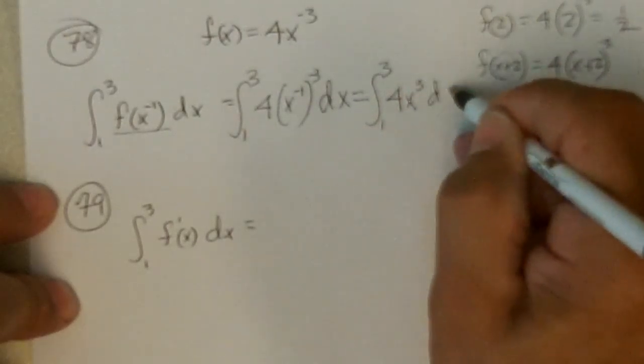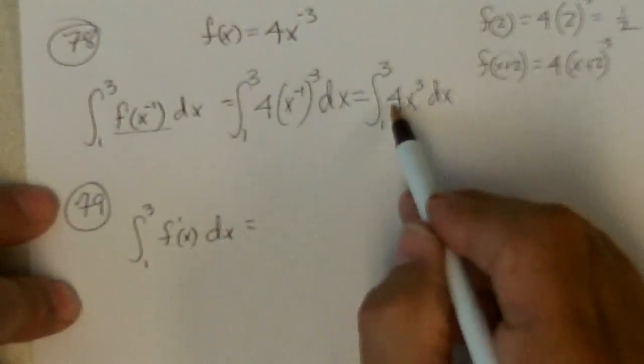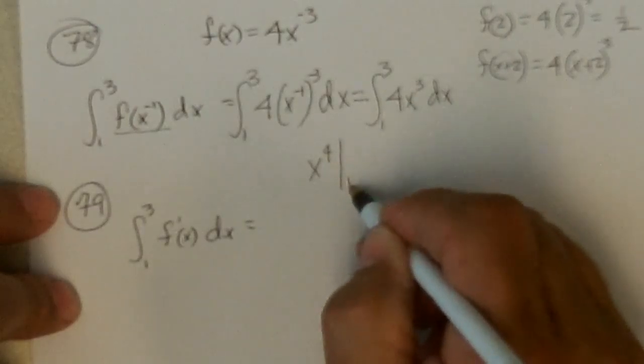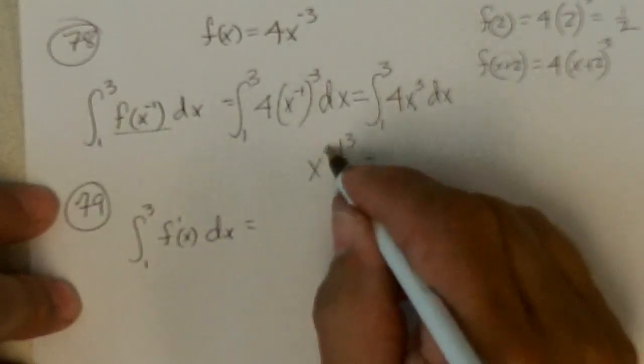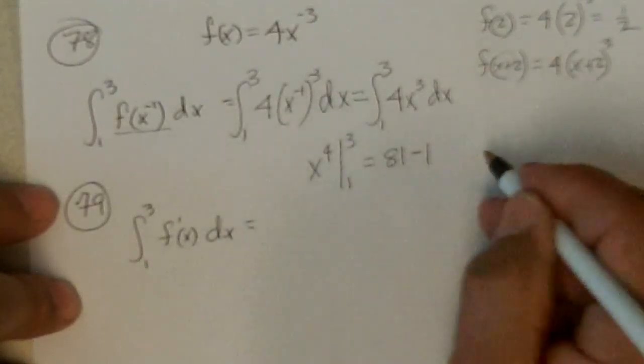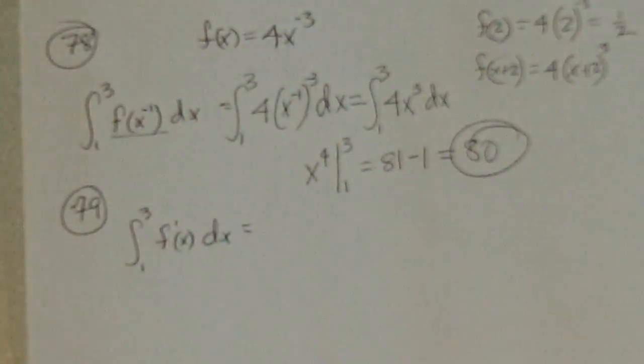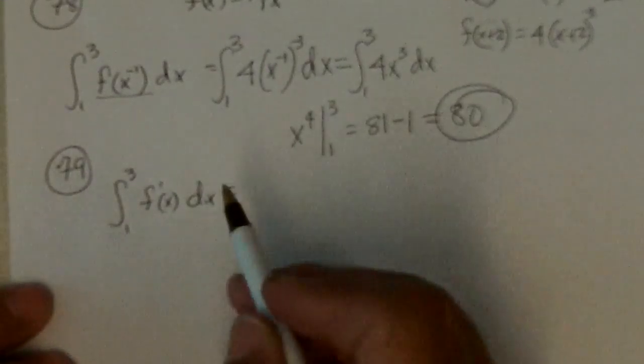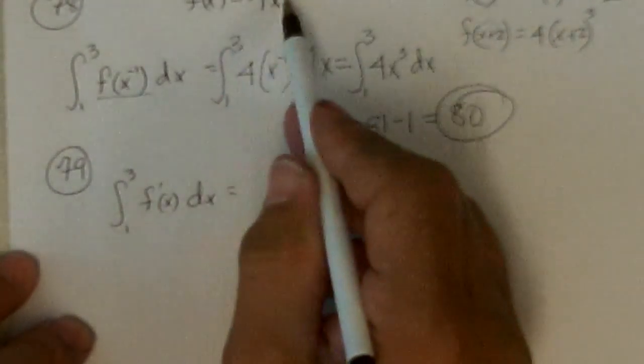Well, when I got a power to a power, I multiply. And so this is the integral from 1 to 3 of 4x, minus 1 times minus 3 is plus 3. And the anti-derivative of this will go to 4 and divide by 4 gets rid of the 4. And so I'm just going to get x to the 4th evaluated from 1 to 3, which means I put in 3 first. 3 to the 4th is 81. Put in 1, I get 1. And I subtract those and I get 80.